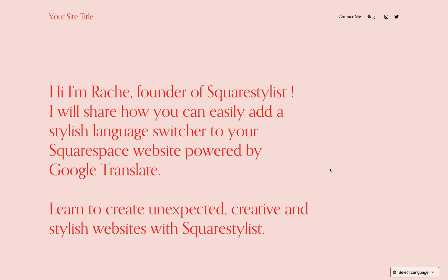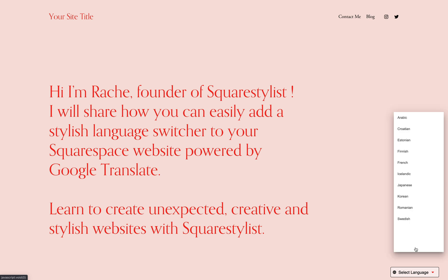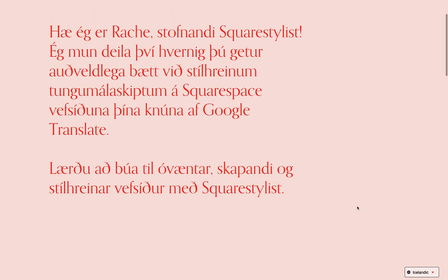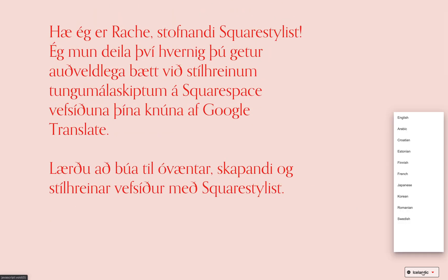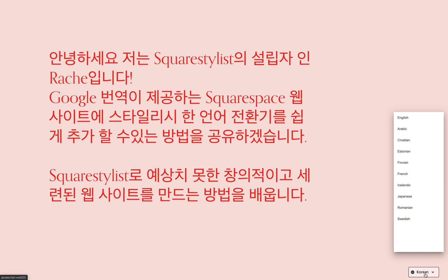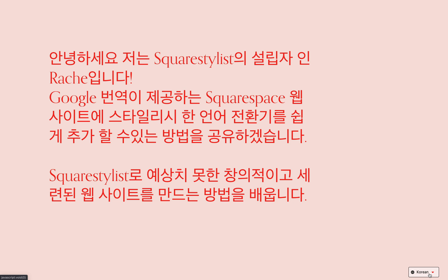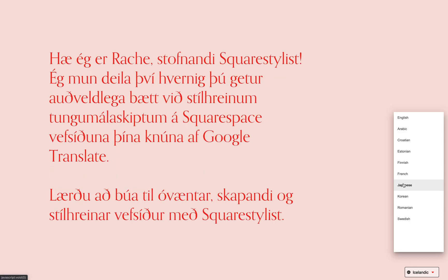Hi everyone, this is Rage from Square Stylist dot com. In this video I'm going to share how you can easily add a language switcher to your Squarespace website. This is powered by Google Translate, so note that these translations are machine generated, but the beauty of it is you can enable any language that's supported by Google Translate. I'm also going to share how you can easily change the style of this switcher such that it will match your branding.